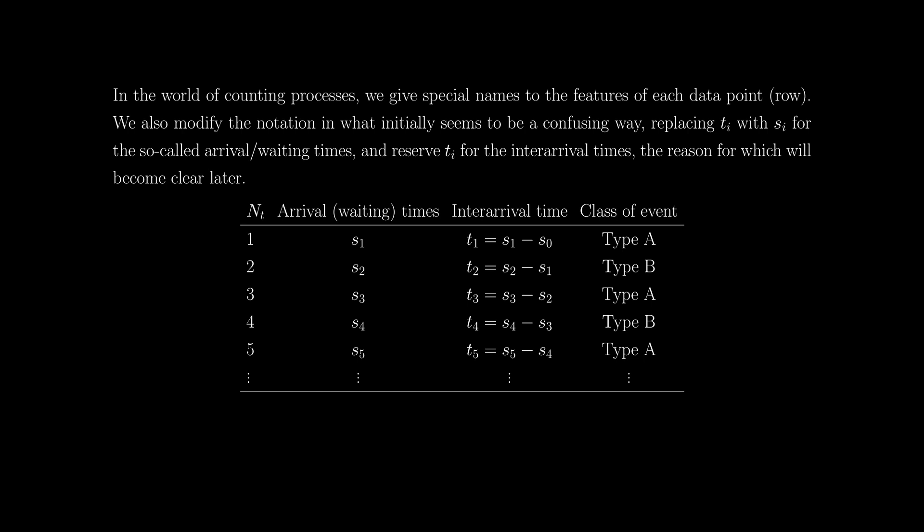In the world of counting processes, we give special names to the features of each data point. Each data point is a row on this table, and the features are the columns. The first is obviously the count — that's just N(t). The times at which we observe events we refer to as arrival or waiting times, because we wait until we observe the first event, the second event, etc. The inter-arrival times are self-explanatory, and the class of event remains the same.